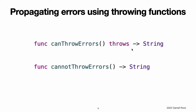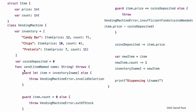Note: only throwing functions can propagate errors. Any errors thrown inside a non-throwing function must be handled inside the function. In this example, the VendingMachine class has a vend(itemNamed:) method that throws an appropriate vending machine error if the requested item is not available, is out of stock, or has a cost that exceeds the current deposited amount. The implementation uses guard statements to exit the method early and throw appropriate errors if any of the requirements for purchasing a snack are not met.